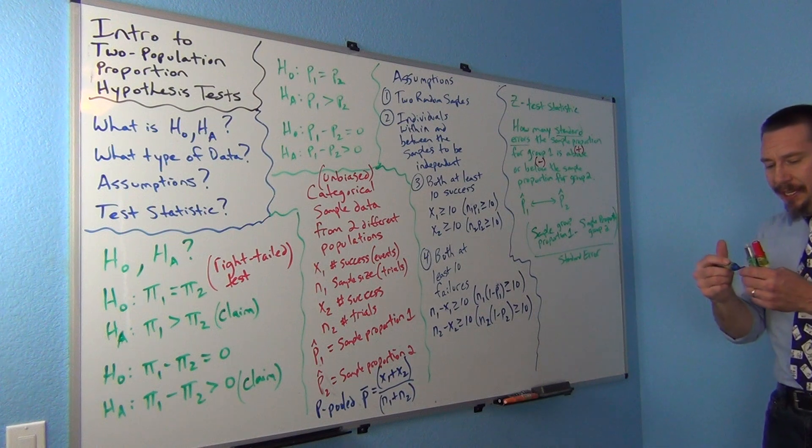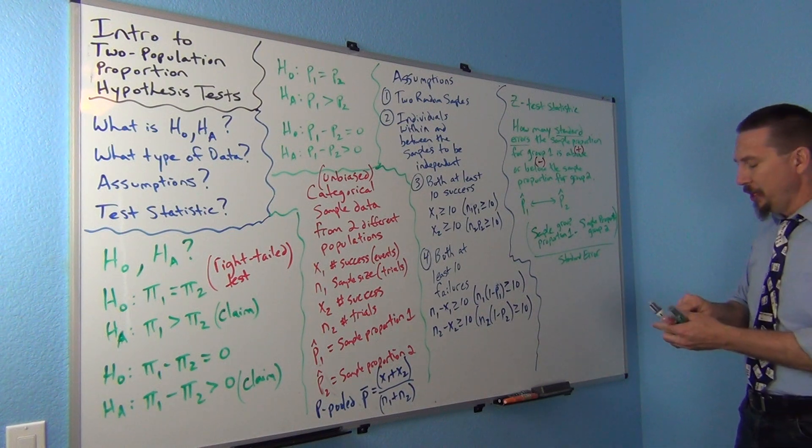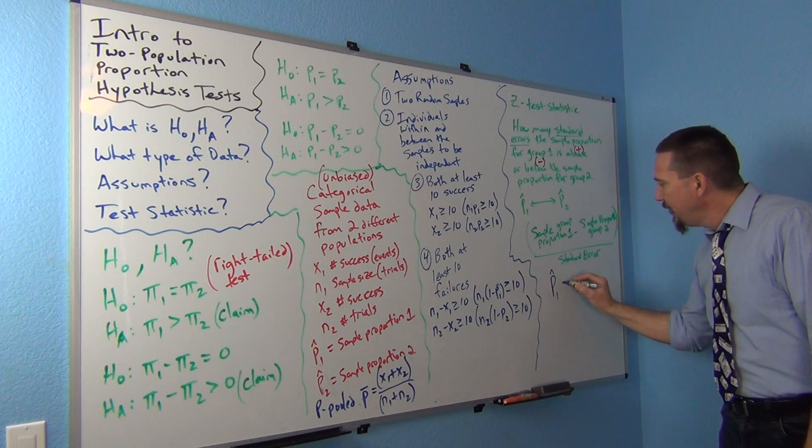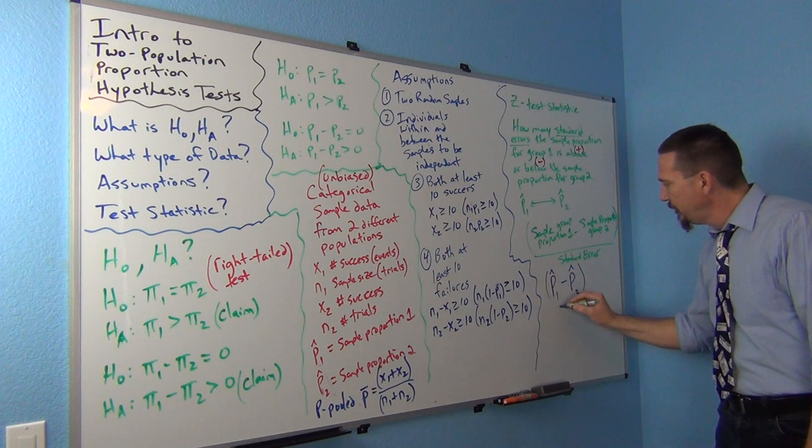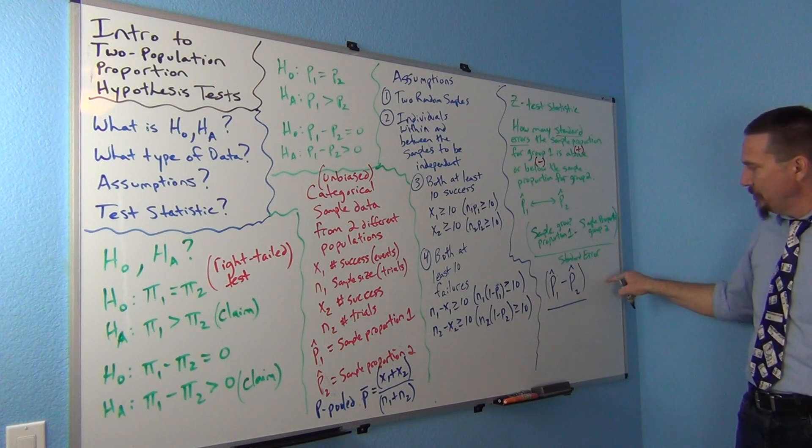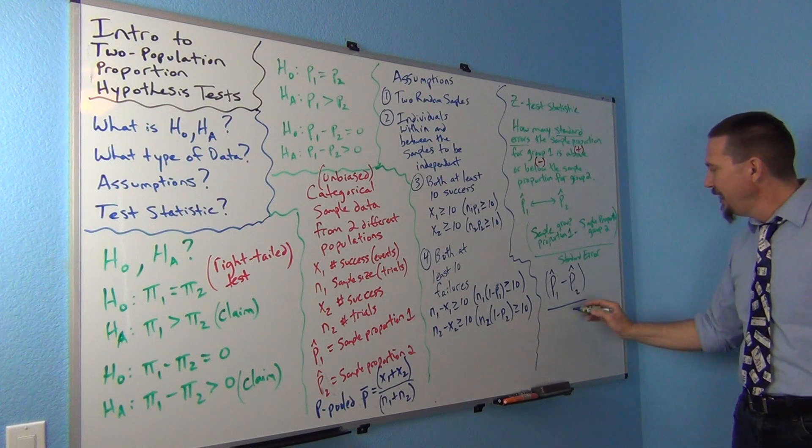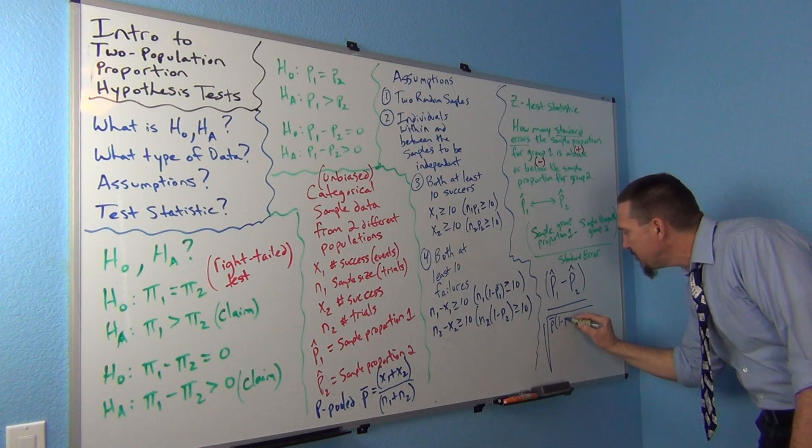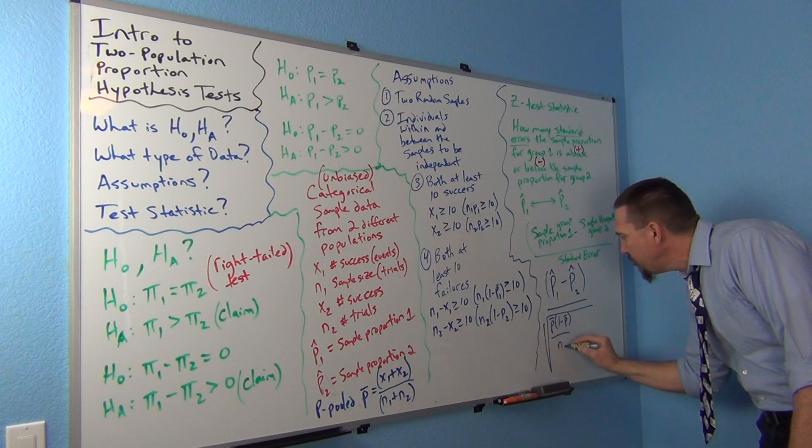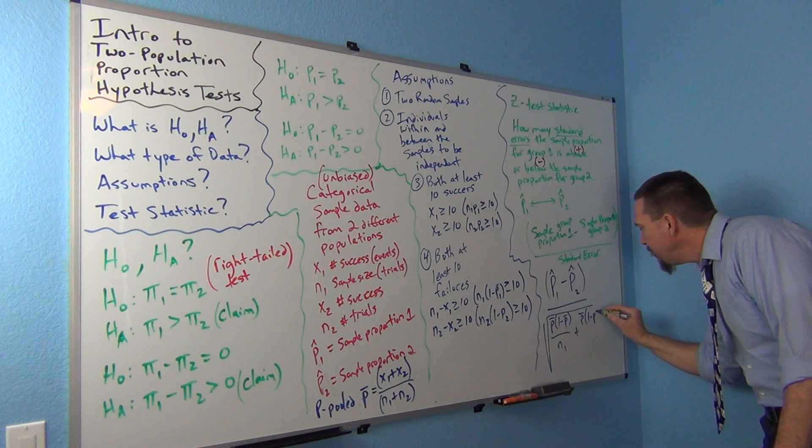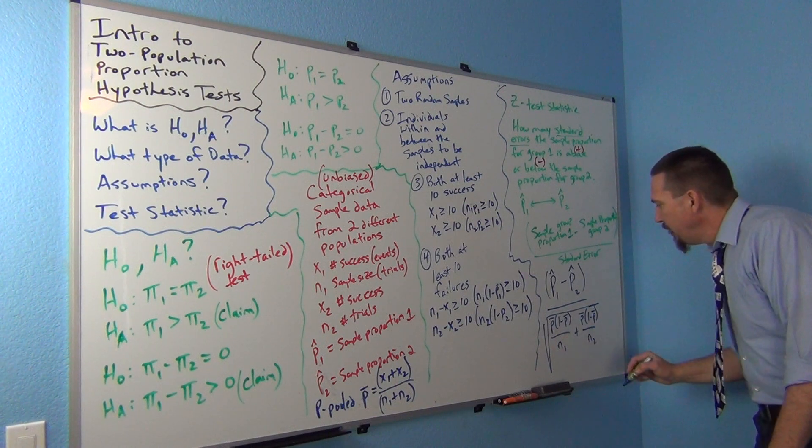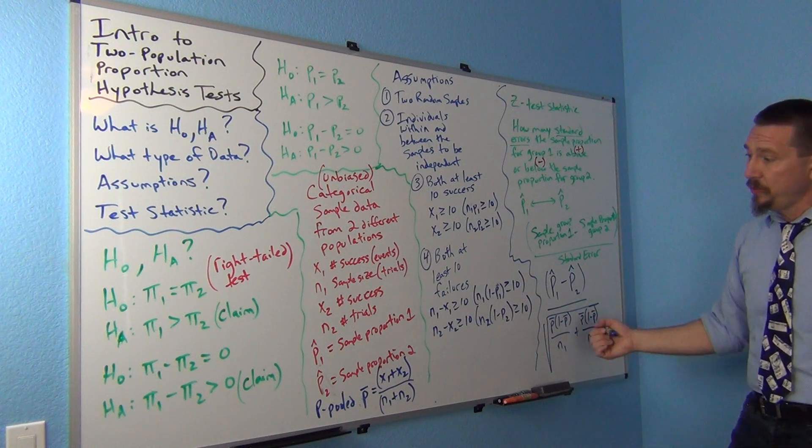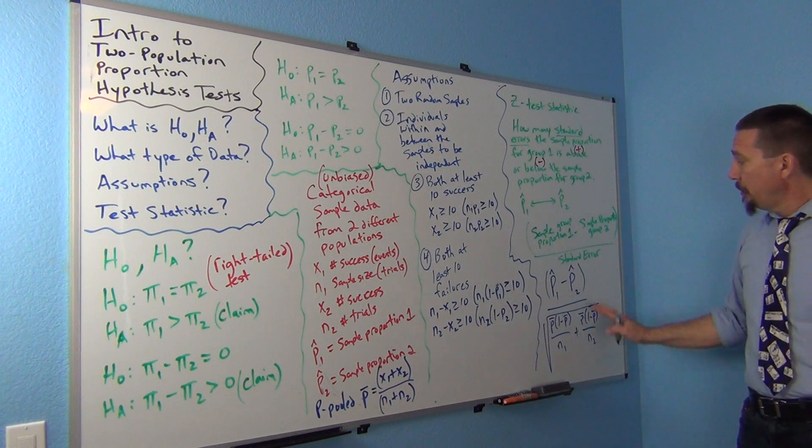All right. So, what does our formula look like? The computers are, again, going to calculate these formulas. But, our formula would look like this. We're going to go P1 hat minus P2 hat. Sometimes you'll see the formula is minus zero there. Okay? You can do that. Divided by the standard error, square root of P-pooled times (1 minus P-pooled) over N1 plus P-pooled times (1 minus P-pooled) over N2. And that's our standard error estimation formula using the pooled approach instead of using the original P1 hat and P2 hat.